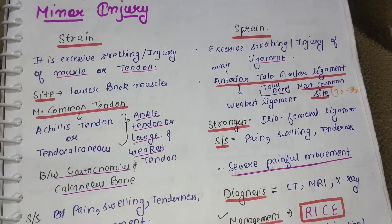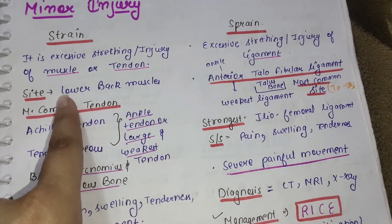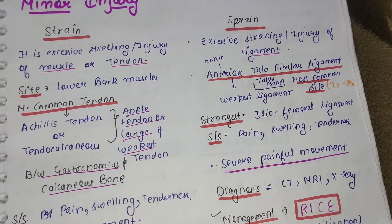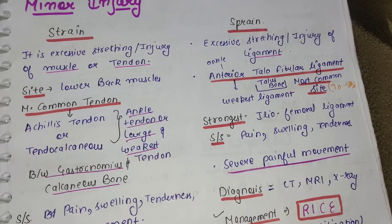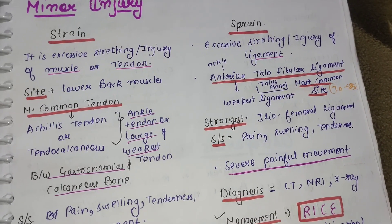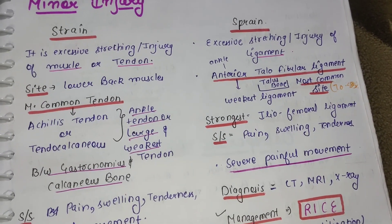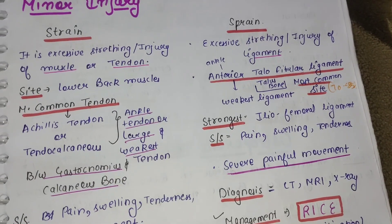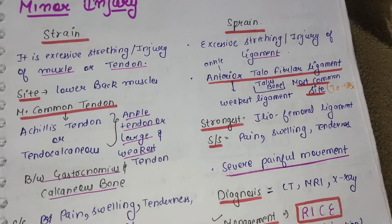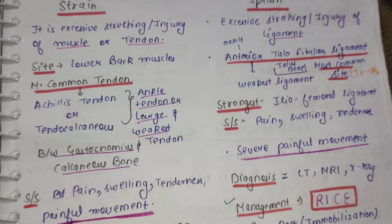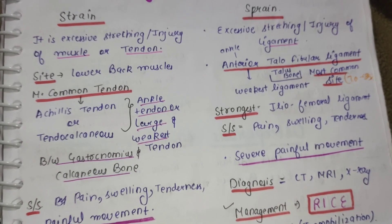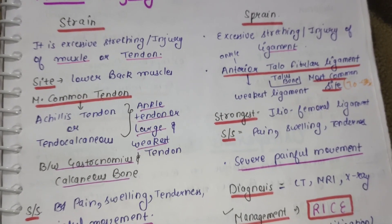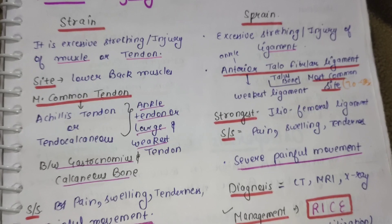Strain is excessive stretching and injury of muscles and tendons. In strain, excessive stretching occurs in the muscles and tendons, which is why the strain occurs. It is excessive injury to the muscles and tendons. Tendon connects muscles to bone — so in this case, it will be tendon injury and muscle injury.